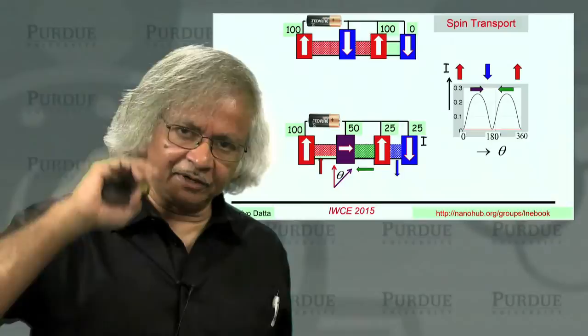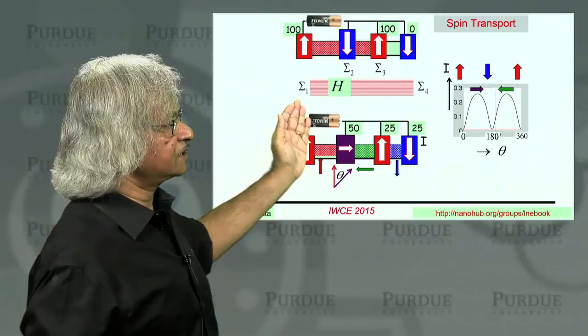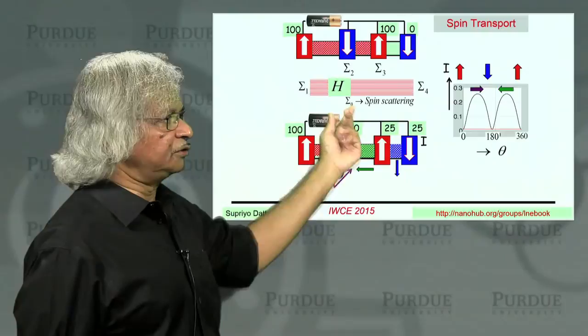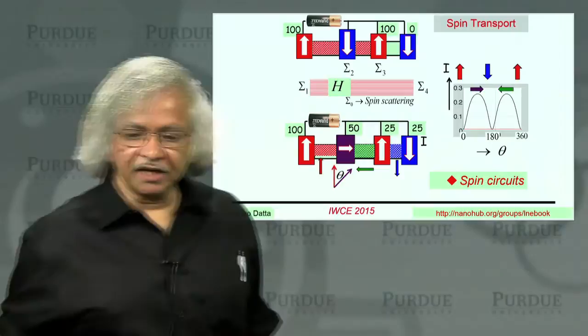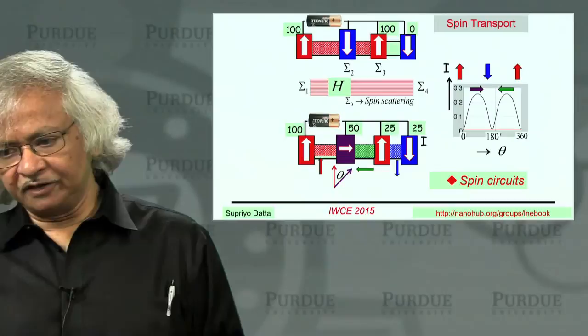And people have proposed transistors, spin transistors, which are kind of based on similar principles. And whether those are useful devices, that remains to be seen. That's not the point. The point I'm trying to make is that subtle effects like this could all be included using NEGF in a straightforward way. You'd have a H that describes channels and you'd have sigmas that describe your contacts. If you want to include spin scattering, you could do that through sigma zero.